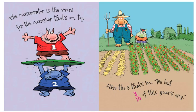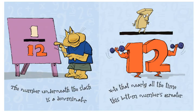The numerator is the word for the number that's on top, like the three that's in 'we lost three tenths of this year's crop.' The number underneath the slash is a denominator. Note that nearly all the times this bottom number is greater.